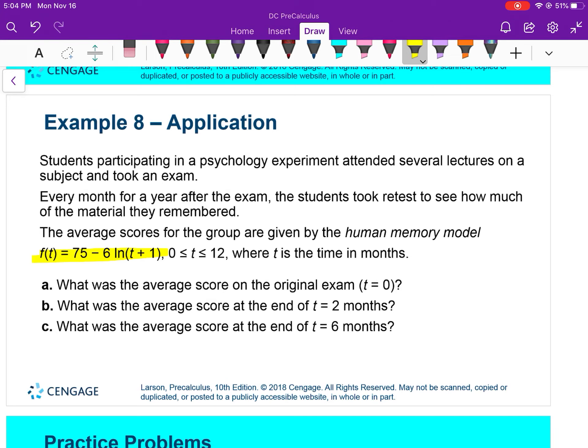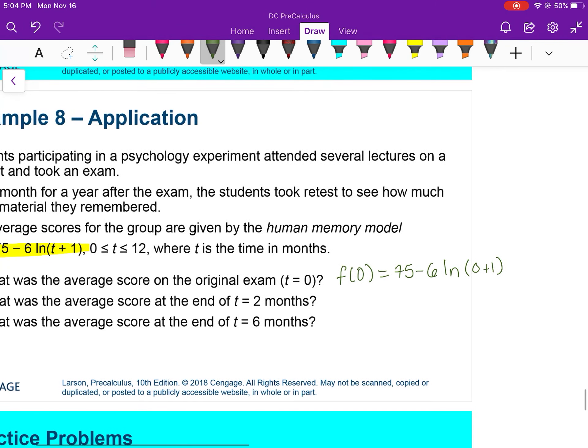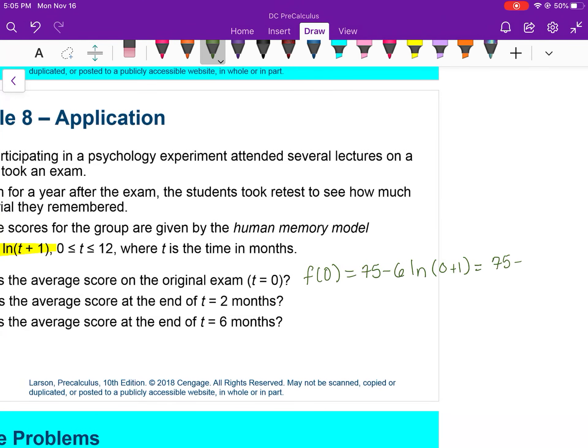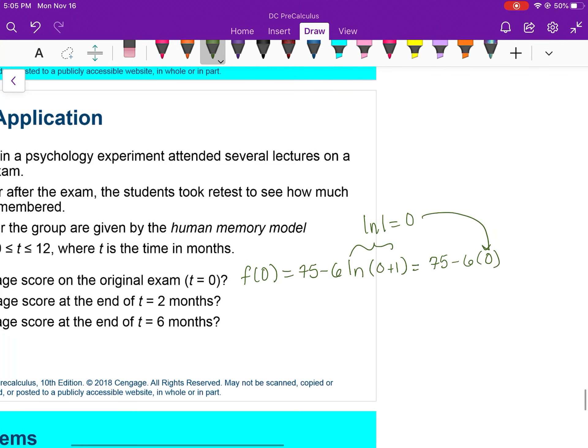So what was the average score on the original exam at time equals 0? So f of 0 equals 75 minus 6 times a natural log of t plus 1, so 0 plus 1 would be what I have. Now if you were paying attention before, the natural log of 1 is 0. So the natural log of 1 is 0, so that's the 0 I have here. So the original score on the exam was a 75%.